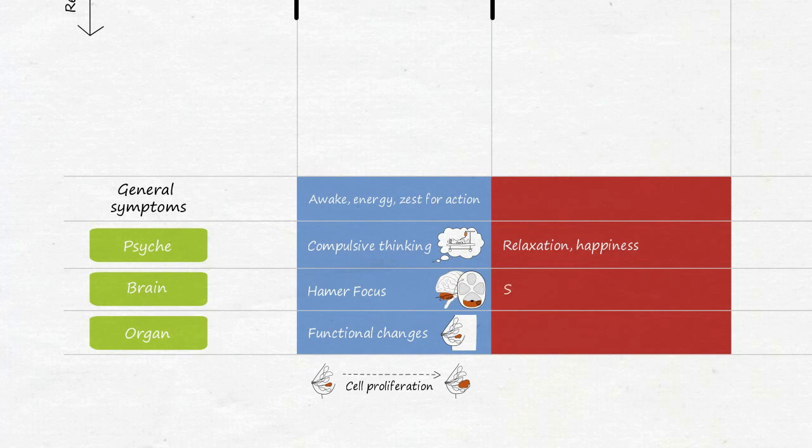At the brain level, there is a swelling in the associated Hamer focus, which, depending on its size, can lead to various brain symptoms, such as certain types of headaches, nausea, or temporary loss of function. At the organ level, the adjustments and changes in the conflict-active phase are now reversed, which is often associated with inflammatory symptoms. For example, when excess tissue is broken down or new tissue is regenerated.